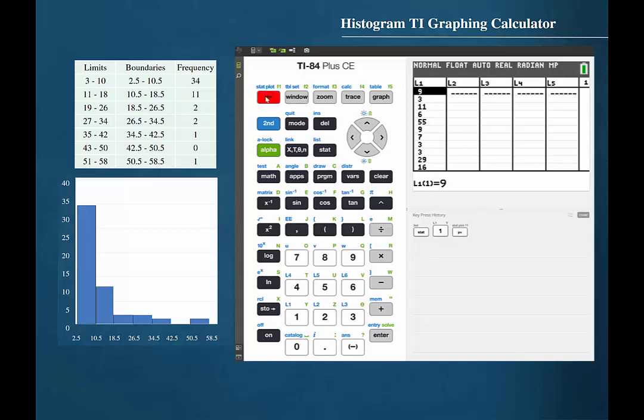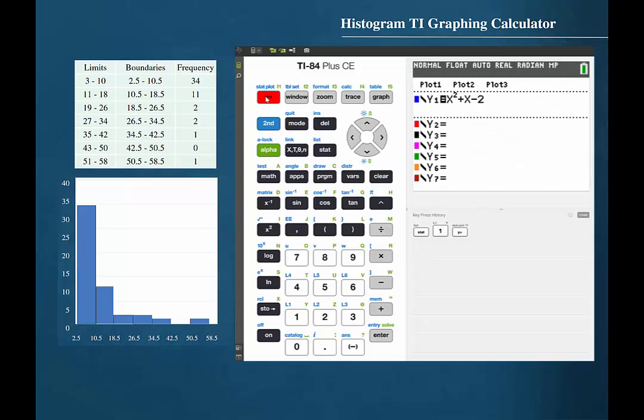Then press Y equals and make sure that all functions entered there are turned off. They can be turned off using the cursor to highlight the equals sign and then pressing enter. Note that the equals sign is no longer highlighted. This indicates that this function is turned off and will not be graphed.